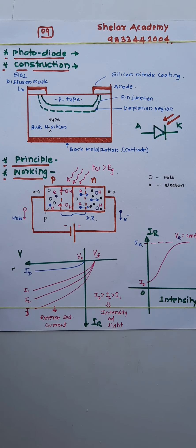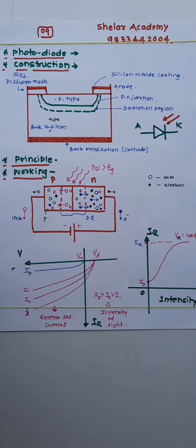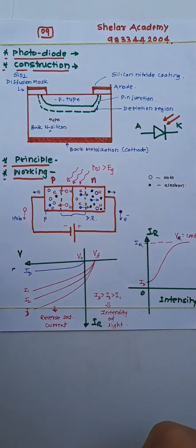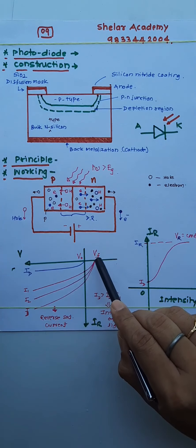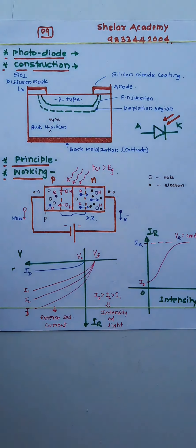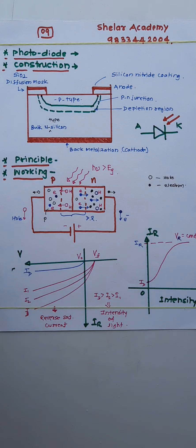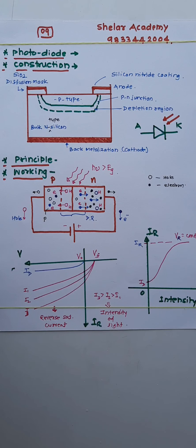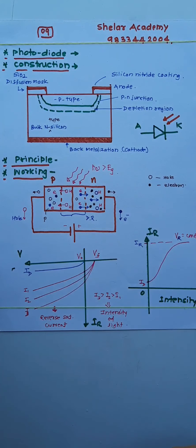This device converts light energy into electrical energy. Some advantages of this device: it can be instantly switched on or off; the saturation current can immediately be made zero by applying a small forward potential difference. It is available at low cost. This device is compact and very lightweight, so it is portable. It also gives a response for visible light.